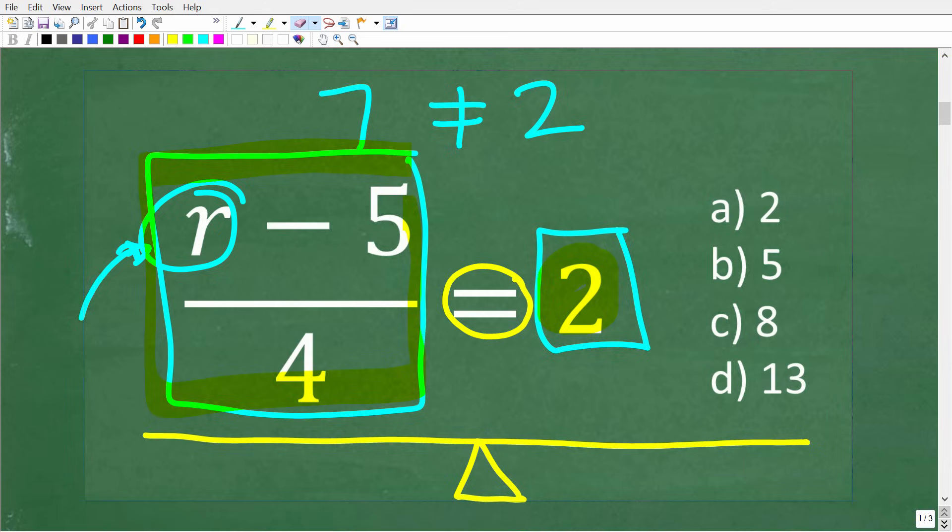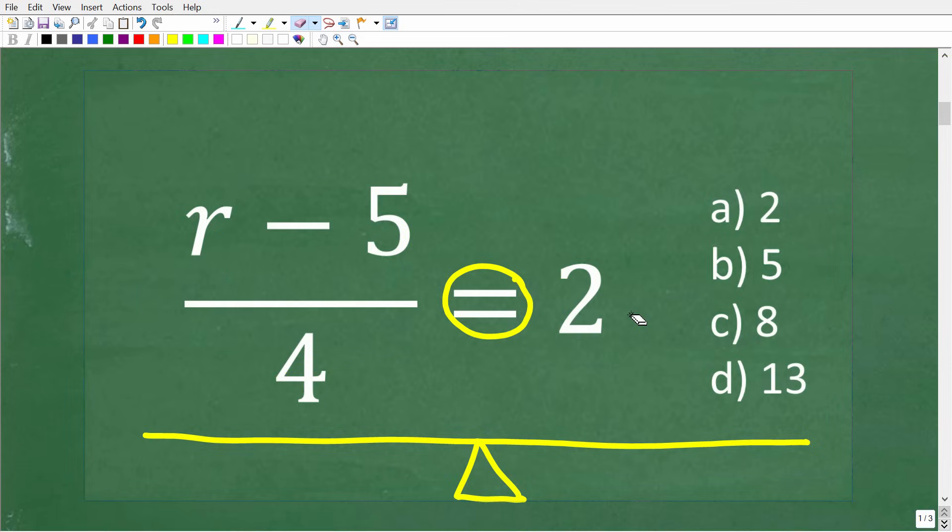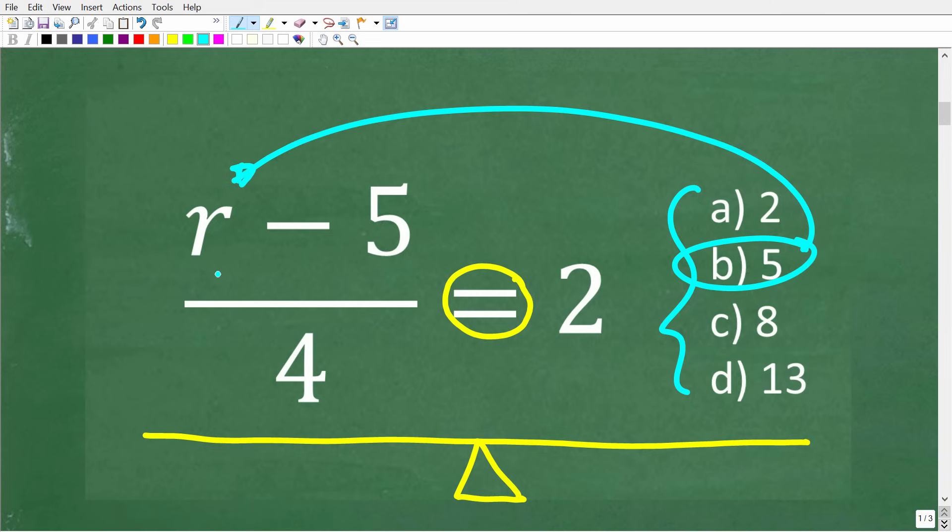All right, so if you understand that, well, this is very easy because we have a multiple choice question. In other words, one of these over here is the right answer. So we can just simply start testing values, right? So let's suppose we test 5 and put 5 in for r. Okay, so if 5 is what r is equal to, well, we replace this r with a 5. But look what happens. We have 5 minus 5,